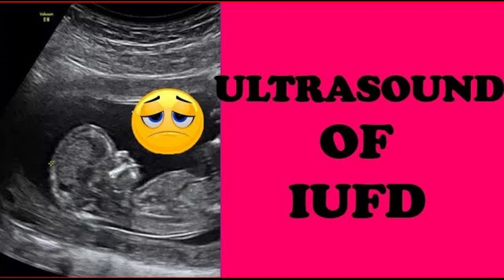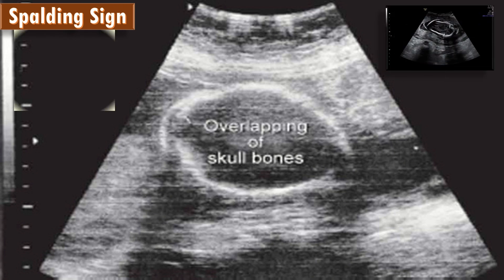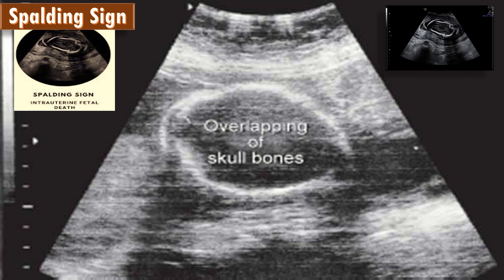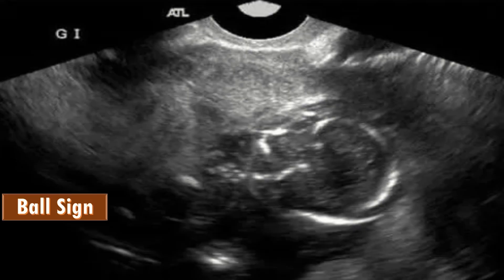A very important investigation is fetal ultrasound for fetal viability, looking for signs such as Spalding's sign — overlapping of the fetal cranial bones at the sutures after fetal death in the uterus — Robert's sign — the presence of gas shadows within the heart or great vessels, seen one to two days after death and sometimes as early as 12 hours — and the ball sign of IUFD, where the fetal body appears curled into a ball or extreme hyperflexion, associated with fetal demise.